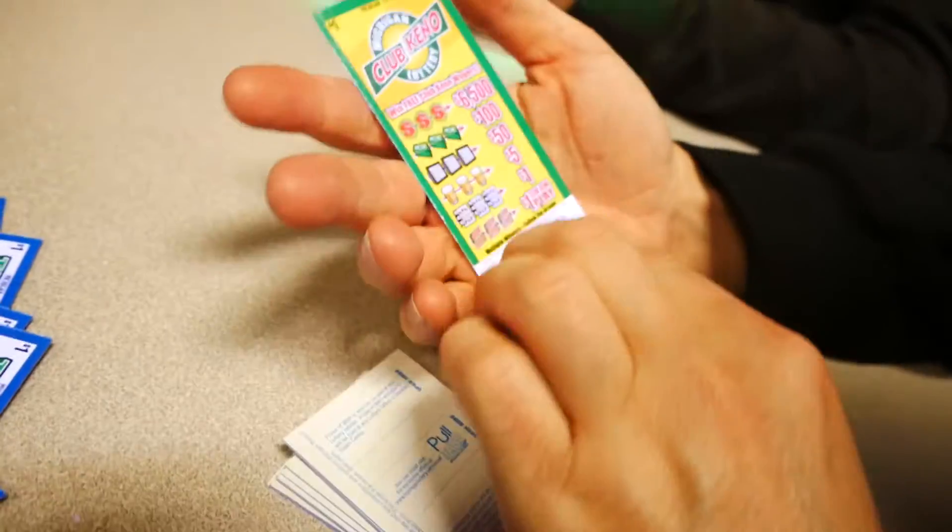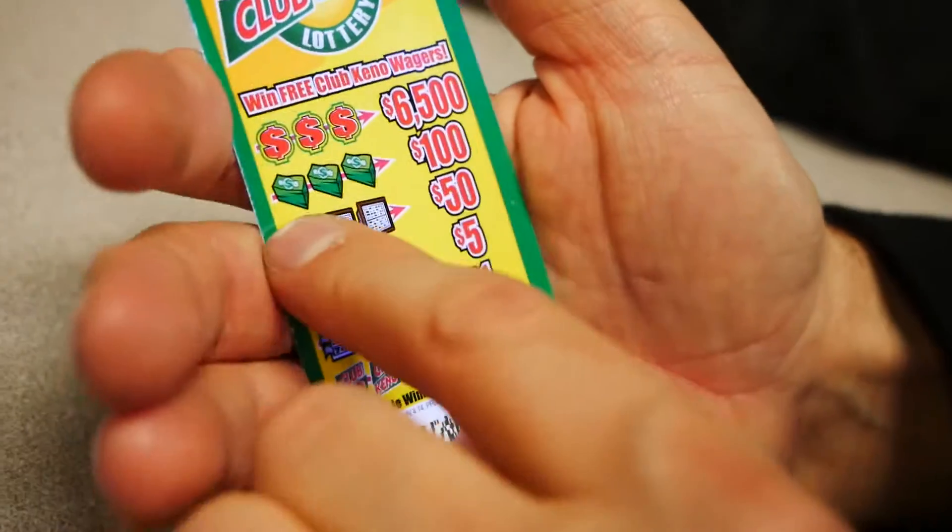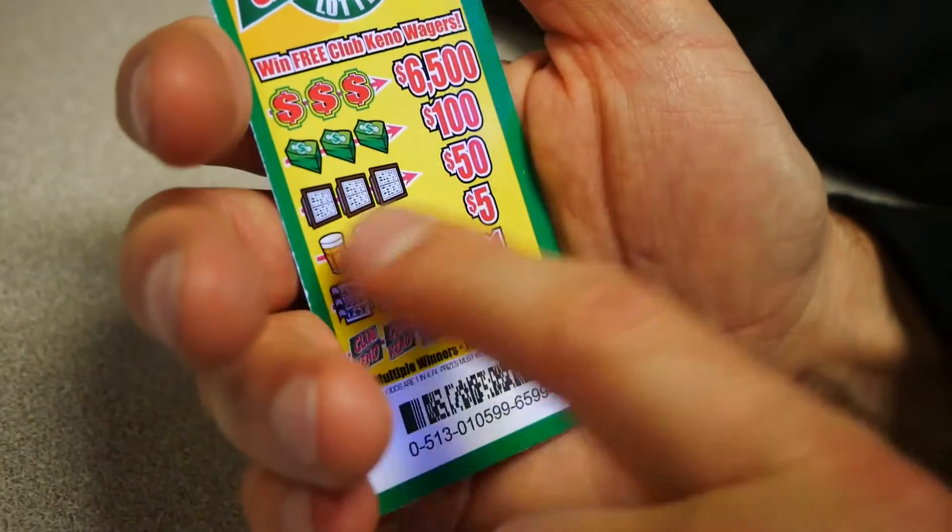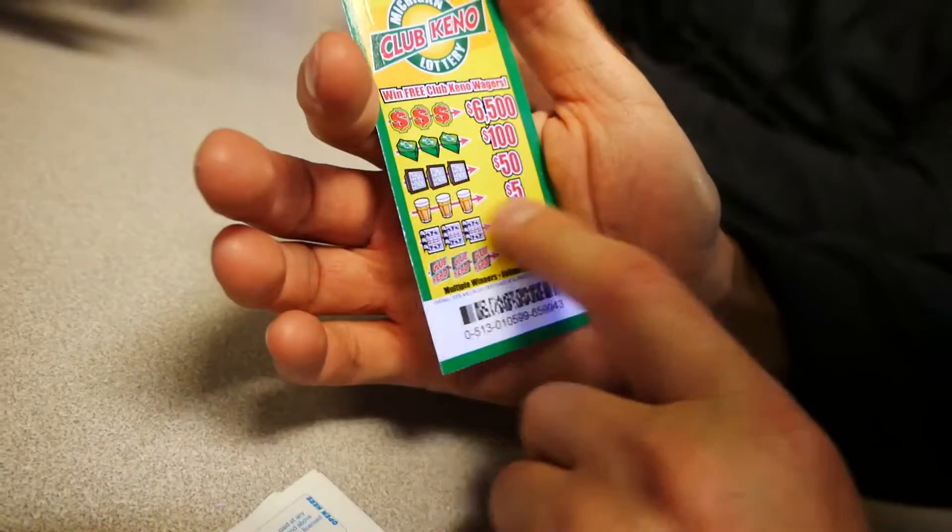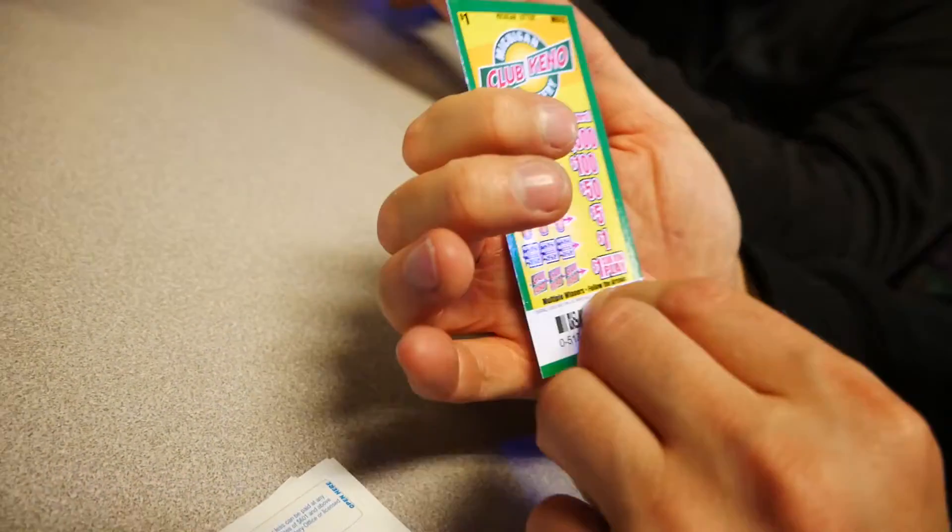He gave us one. They might have fixed it. So we're gonna do $10 on each for all. All right, now we get three money symbols, that's $6,500, three cash, $100, and so on. Oh, what is that? Some sort of weird game. In Keno Club, you get a $1 Keno Club.